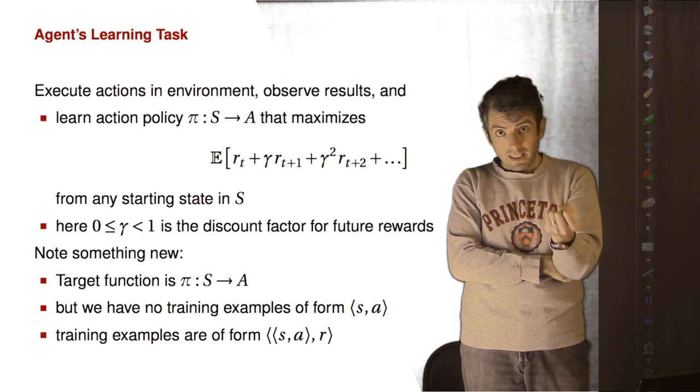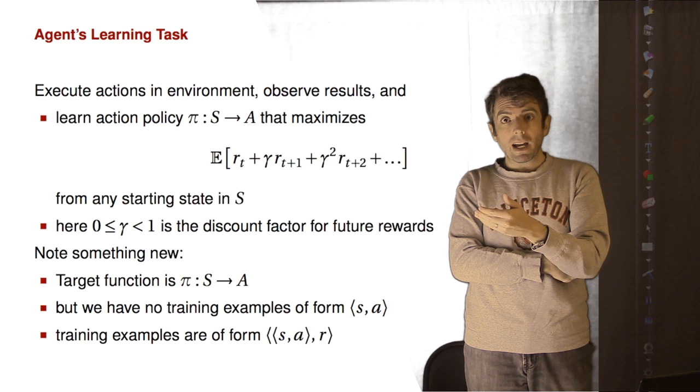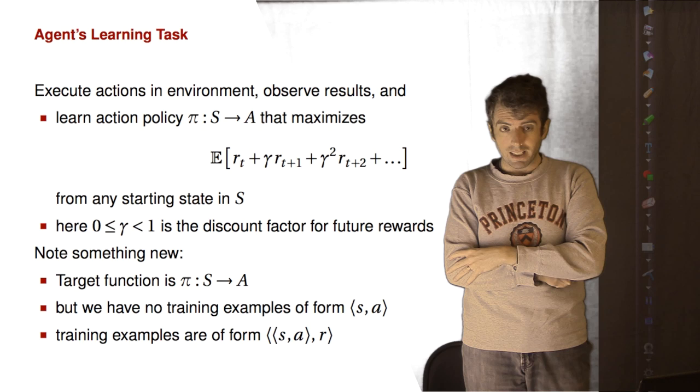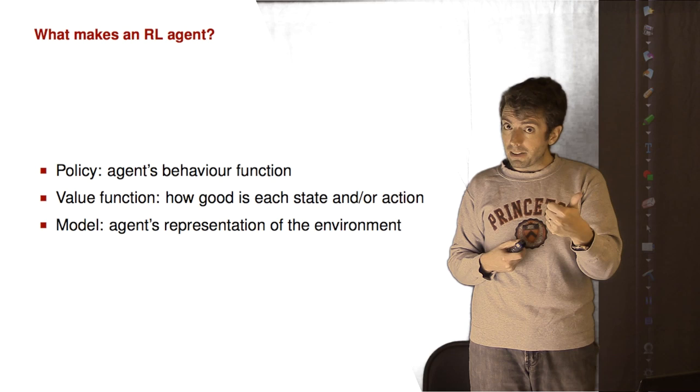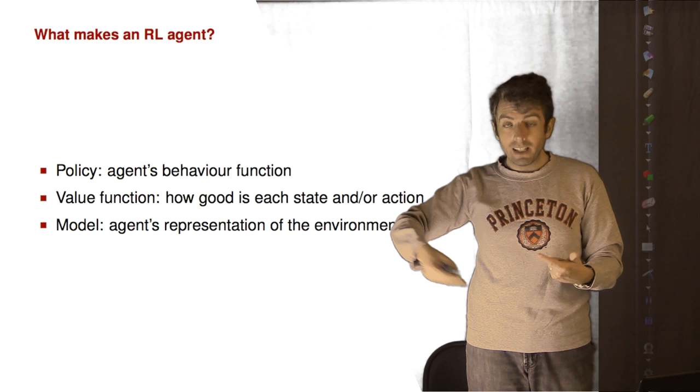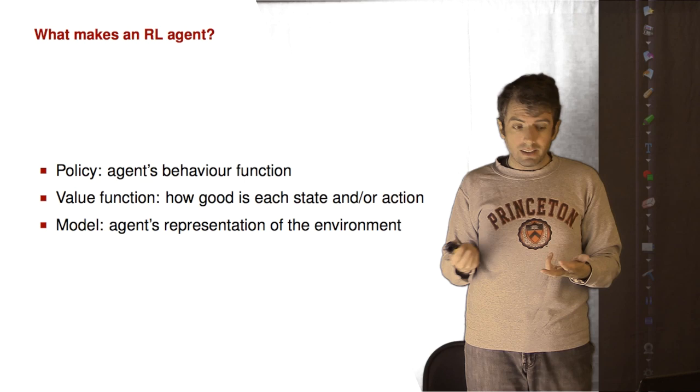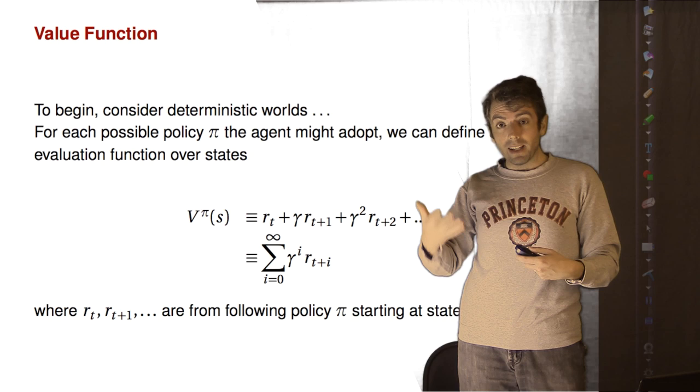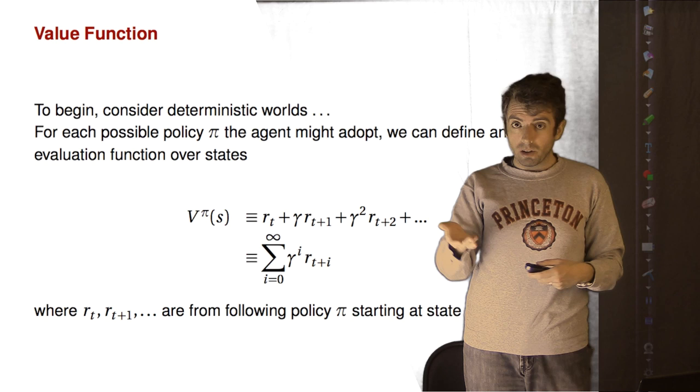So one thing that you may notice is that we're trying to map states to actions, but that isn't the feedback that we get from the environment. The feedback that we get from the environment is given a tuple of state and action, we get some reward. So the job of our algorithm is to try to figure out what actions we should be taking. Reinforcement learning algorithms need to learn both a policy, what action to take in particular states. They also need to have something called a value function that says how good is it to take some particular action in a given state, i.e. try to estimate the reward. And they often have a model that tries to understand the environment.